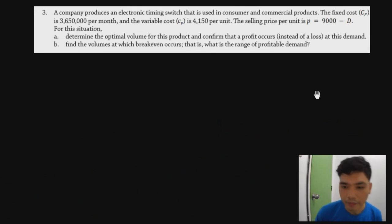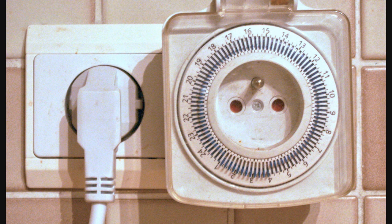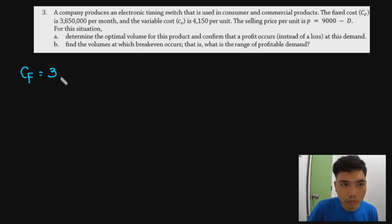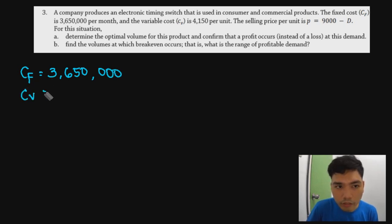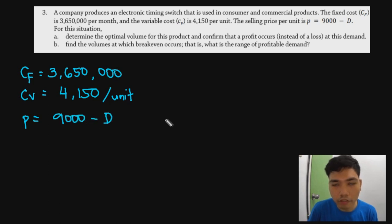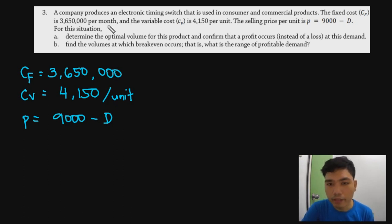For the third problem, a company produces an electronic timing switch. The fixed cost is 3,650,000 and variable cost is 4,150 per unit. The selling price is given as a demand function: price per unit equals 9,000 minus D, where D is demand. We need to determine the optimal volume for profit, and the range of profitable demand.